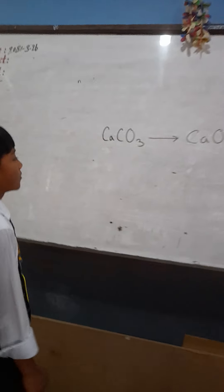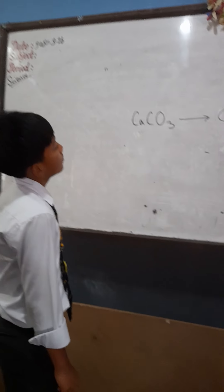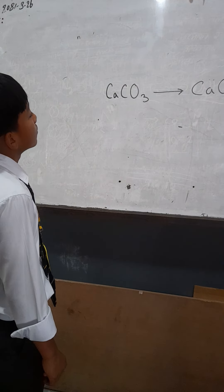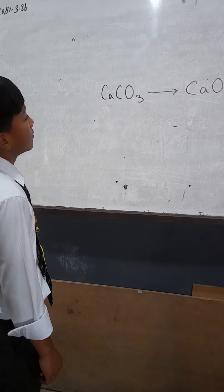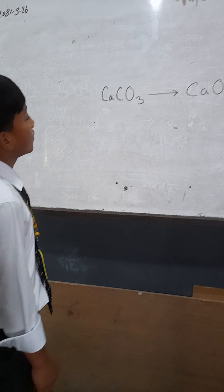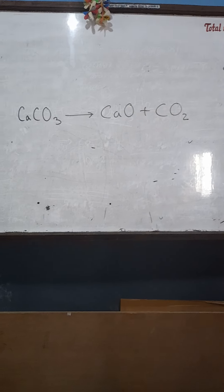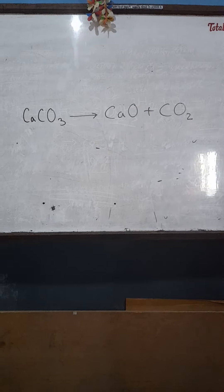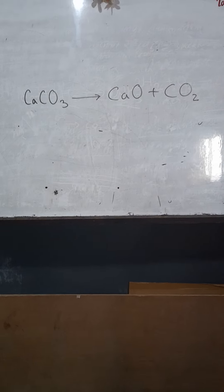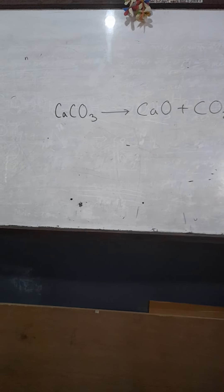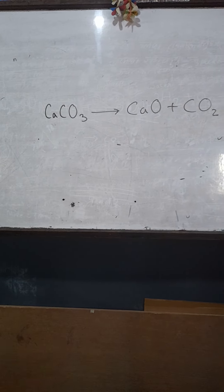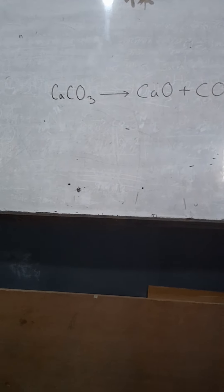Now tell me, how much oxygen is on the left hand side? How much oxygen is on the right hand side? Three — so it is already balanced. Good.